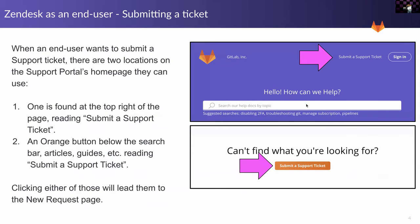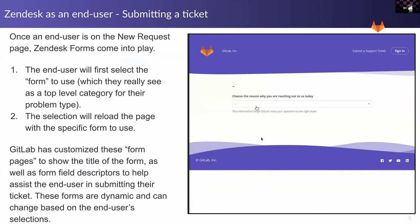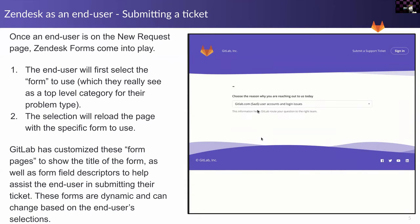When an end user wants to submit a support ticket, there are two locations on the support portal homepage. There's one at the top that says Submit a Support Ticket, which looks like a link, and then at the bottom — after some suggestions, search, and all that — there's a nice orange button that also says Submit a Support Ticket. Either one of those will take you to the new request page.